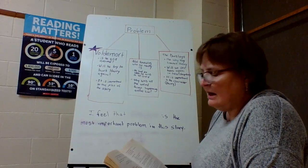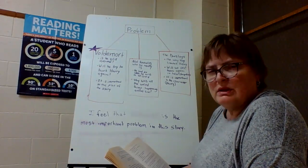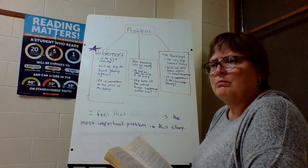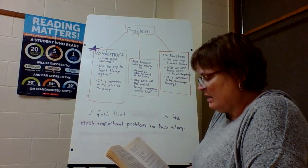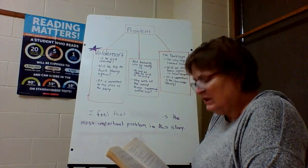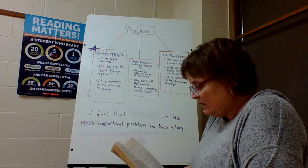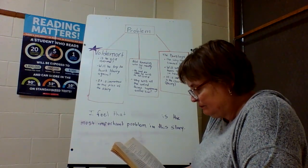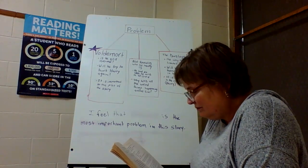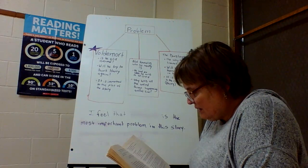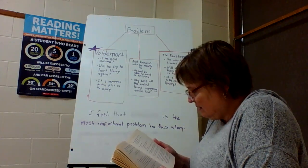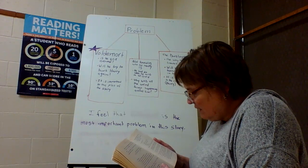I've been stumbling over a lot of these words. There are words that we don't normally use — first of all, it's set in London where the British use different words, and a lot of times it's fictional things, so it's okay to stumble over them. You probably will — I know I definitely have been. One telescope. One set of brass scales. Students may also bring an owl, a cat, or a toad. Parents are reminded that first years are not allowed their own broomsticks. 'Can we buy all this in London?' Harry wondered aloud. 'If you know where to go,' said Hagrid.